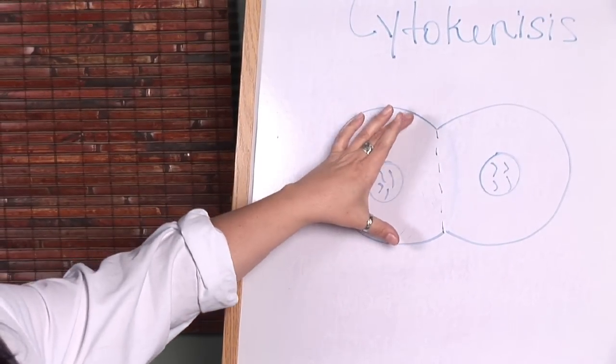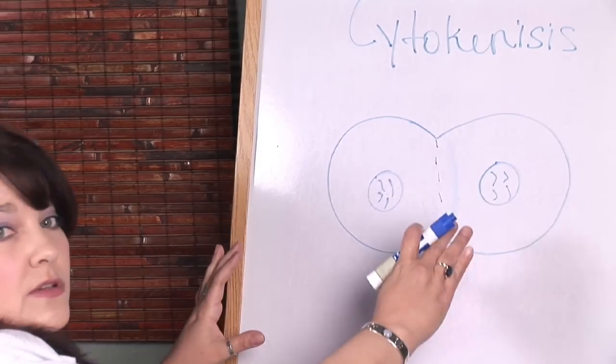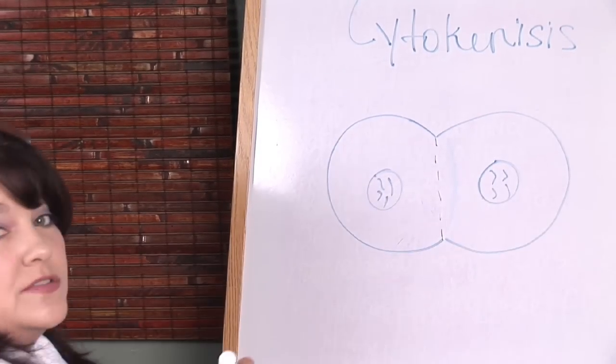Cytokinesis refers to the actual pinching of the cytoplasm. So we have one cell. The nucleus is replicated. It's moved to the other side of the cell.